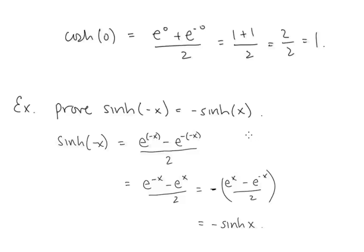Let's prove that sinh(−x) = −sinh(x). Starting with the left side: sinh(−x) = (e^(−x) − e^(−(−x)))/2 = (e^(−x) − eˣ)/2. This is similar to the sinh function but with the subtraction reversed, so we factor out a negative sign to get −(eˣ − e^(−x))/2, which is −sinh(x).